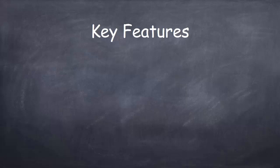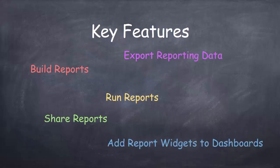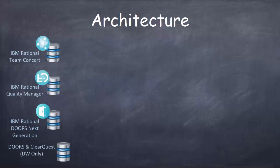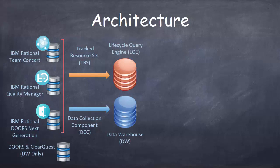JAWS Reporting Service is the reporting framework used by the JAWS-based tools that allows you to build reports, share those reports, run those reports, export the reporting data, and also add report widgets to dashboards. Each of the IBM applications that help you manage your end-to-end delivery lifecycle — Rational Team Concert, Rational Quality Manager, Rational Doors Next Generation, and even Doors and ClearQuest Legacy products — deliver data to what JRS calls a data source automatically via tracked resource sets or TRS feeds and via data collection jobs that can be scheduled. There are two supported data sources: the Lifecycle Query Engine, or LQE, and the Relational Data Warehouse.